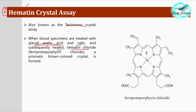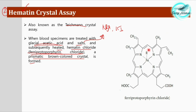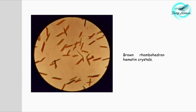In the hematin crystal assay, metal halide salts such as potassium bromide (KBr) or potassium iodide are used, and the sample is subsequently heated. The product is hematin chloride - if a chloride halide is used - whose molecular name is ferri protoporphyrin chloride. This is a prismatic brown-colored crystal. You can see its molecular structure here, where R represents chloride. Under the microscope at 40x to 100x magnification, brown rhombohedron crystals are clearly visible.